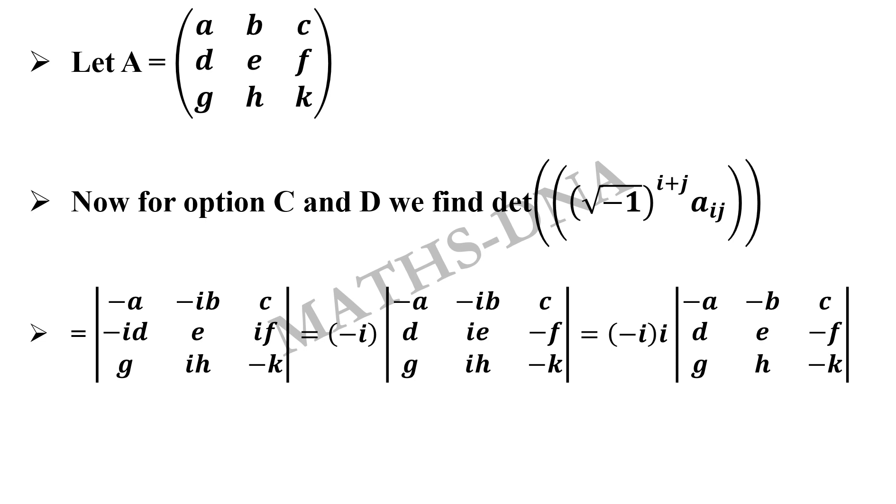Let me tell you how it is done. For A, we already have i raise to i plus j where i in the bracket is a complex number. i plus j is 1 plus 1 that is i square and i square is minus 1 so minus A. Similarly, for minus IB, it is first row and second column. So i raise to 1 plus 2 that is 3, i cube which is minus i, so minus i into B.